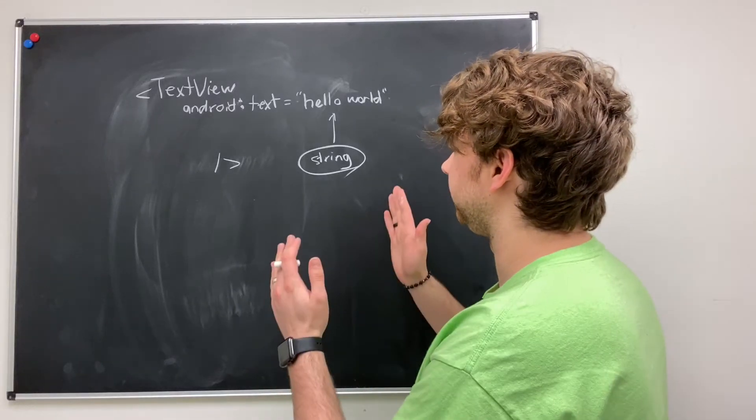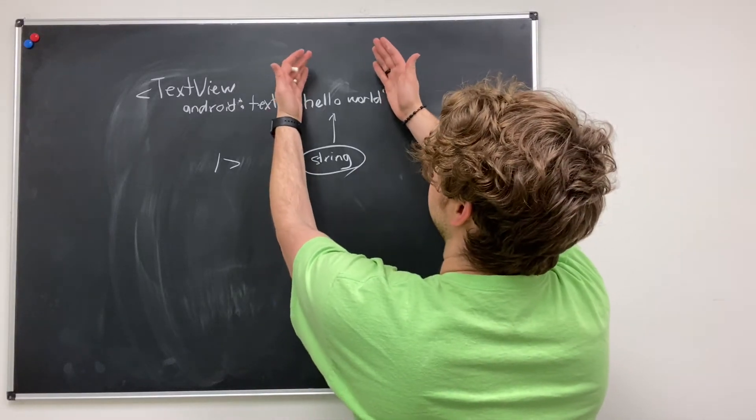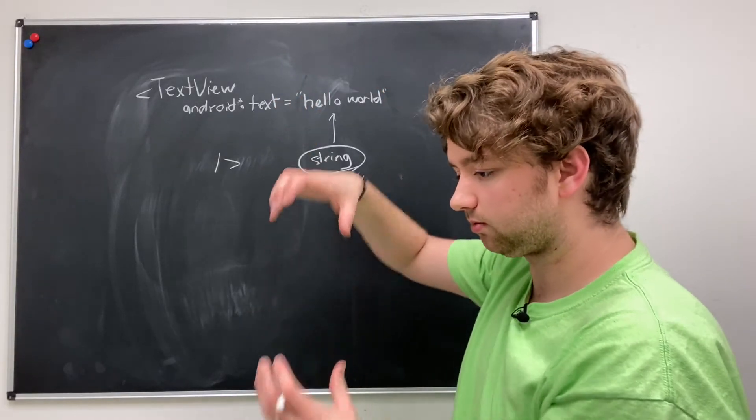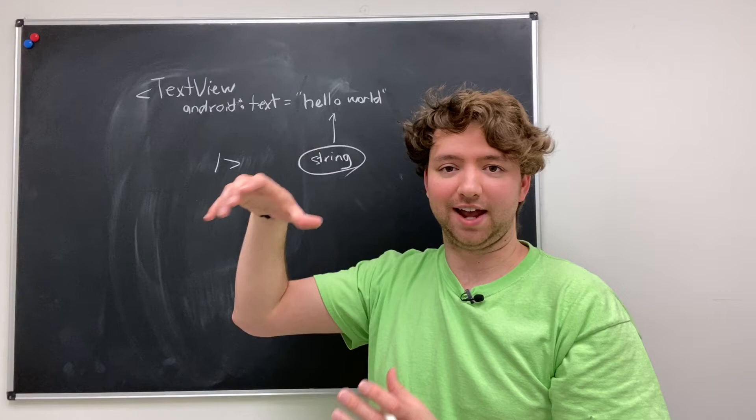So the value that the string is describing does not include the quotes. So it's just hello world. And that's what's going to show up inside of the activity.